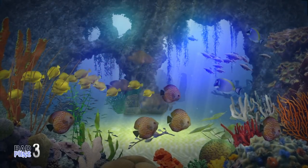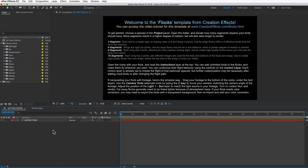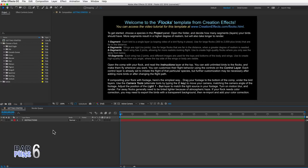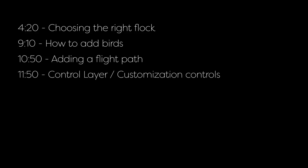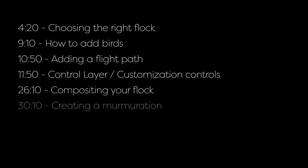Without further ado, let's get started with the tutorial — and I want to apologize right off the bat about all the puns. I have no egrets. I'm going to fly through this because there's a lot to talk about. First I'll cover how the effect is set up and how to choose the right flock. Then adding birds, making the flock fly, customization controls, basic compositing, how to make a starling murmuration, and I'll end with miscellaneous tips.